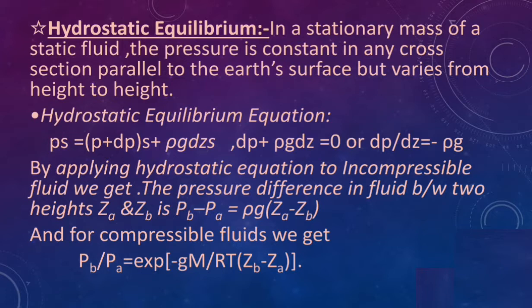To derive the hydrostatic equilibrium equation, we consider a vertical column of a single fluid. The pressure at any point is the same in all directions, and pressure changes along the height of the column. Considering the cross-sectional area, density, pressure at various heights, and forces acting on a small fluid element in equilibrium, the sum of forces equals zero. For incompressible fluids: pb − pa = ρg(za − zb). For compressible fluids, the barometric equation is pb/pa = exp[−gM/RT × (zb − za)].